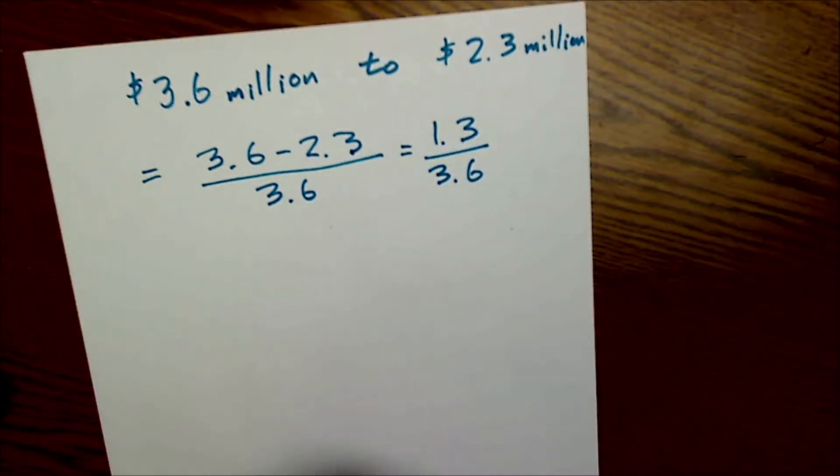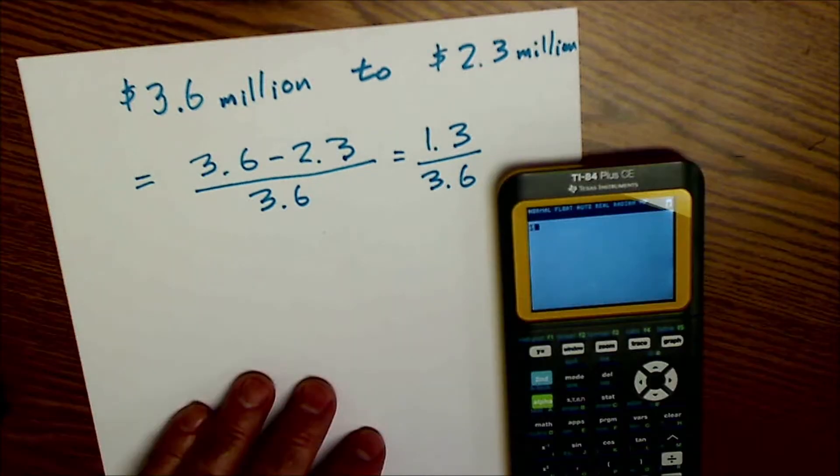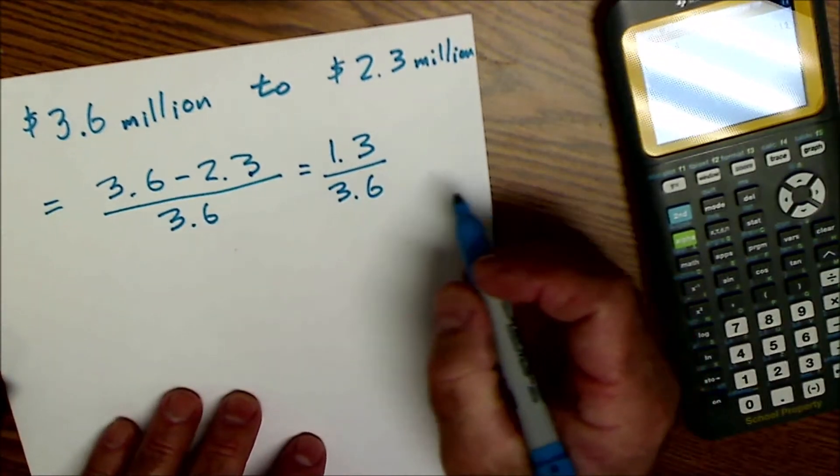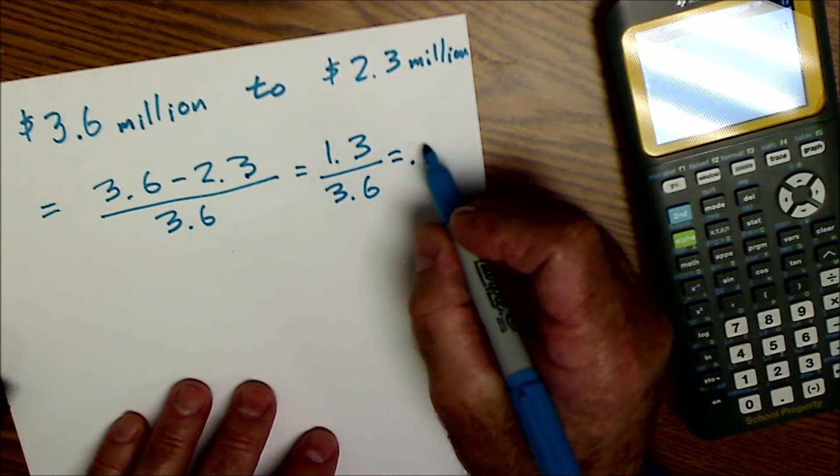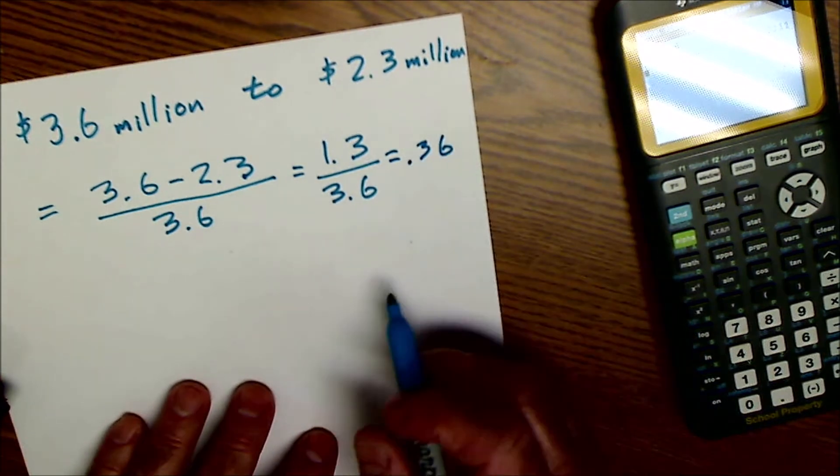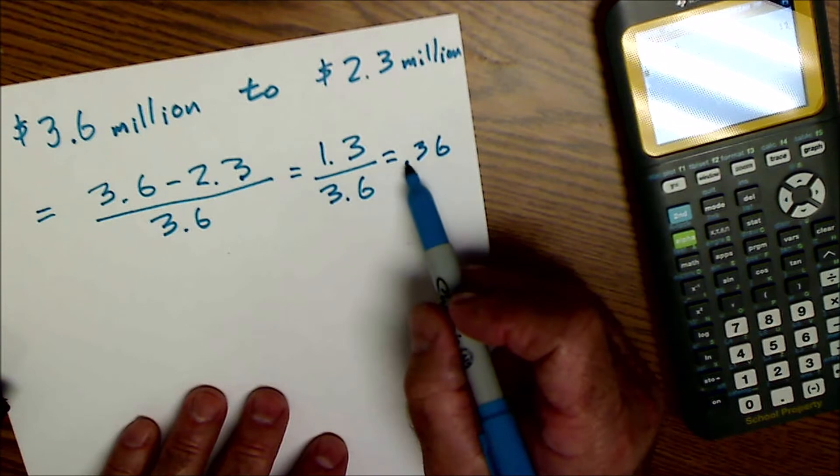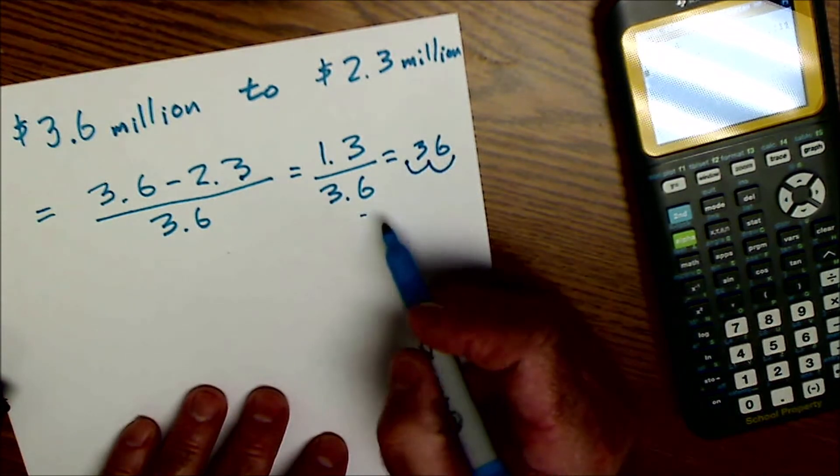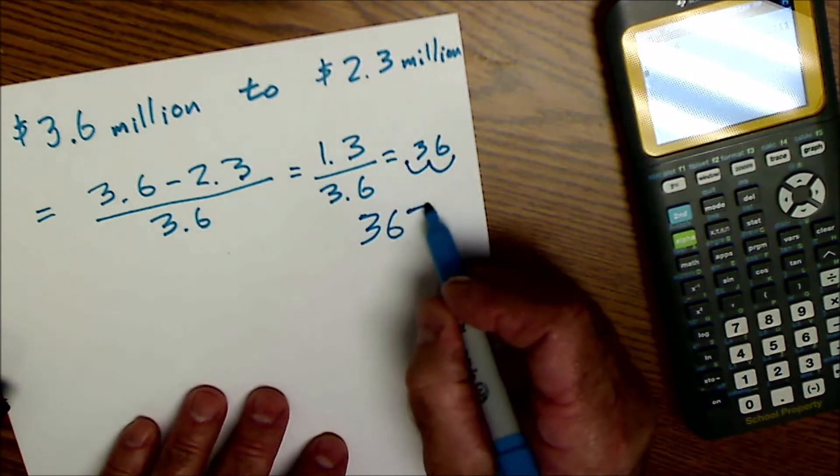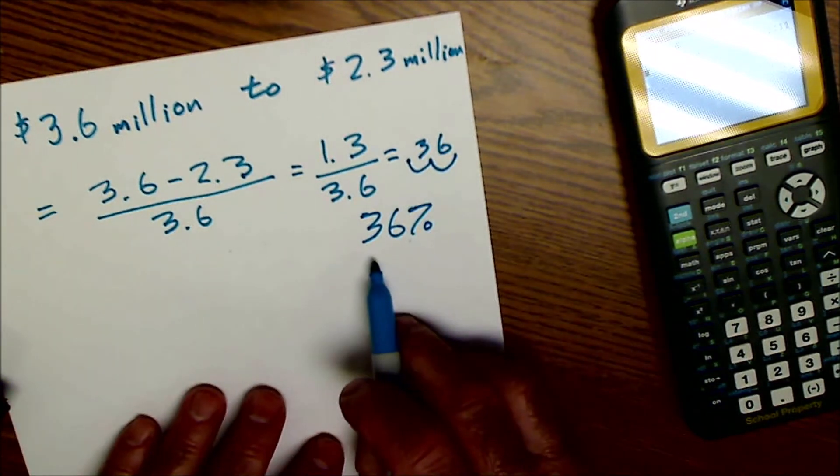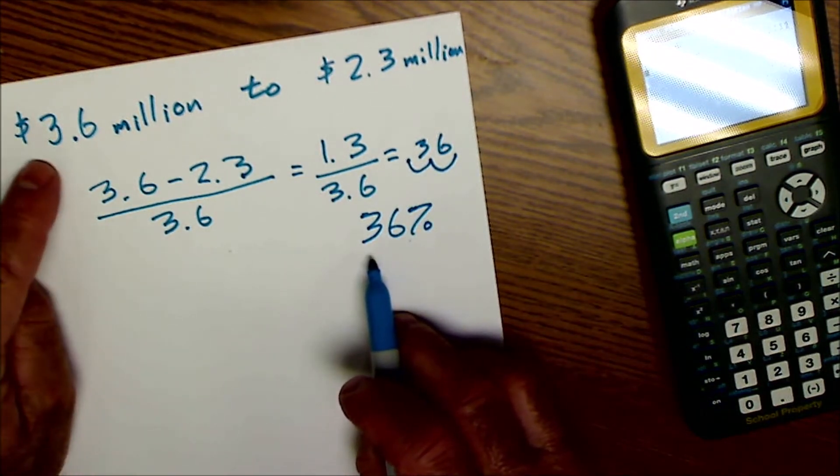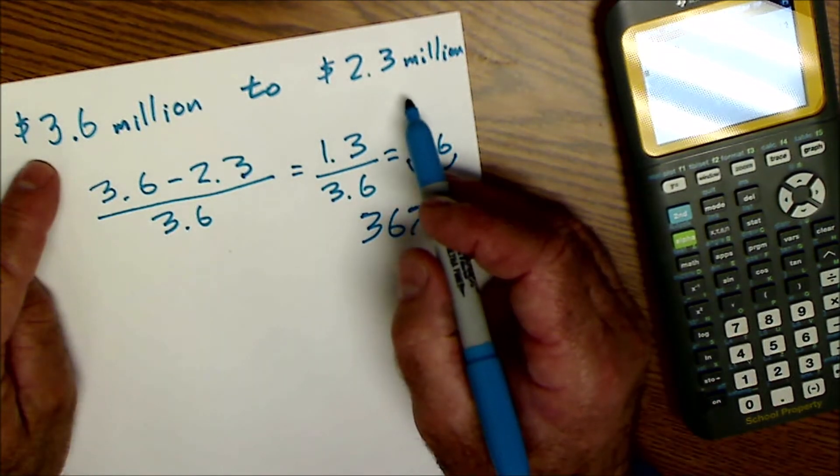I think I'll have to use a calculator for that one. 1.3 divided by 3.6 is 0.36. To convert a decimal into a percent, I go 1, 2 to get 36%. So this is a 36% decrease from $3.6 million to $2.3 million.